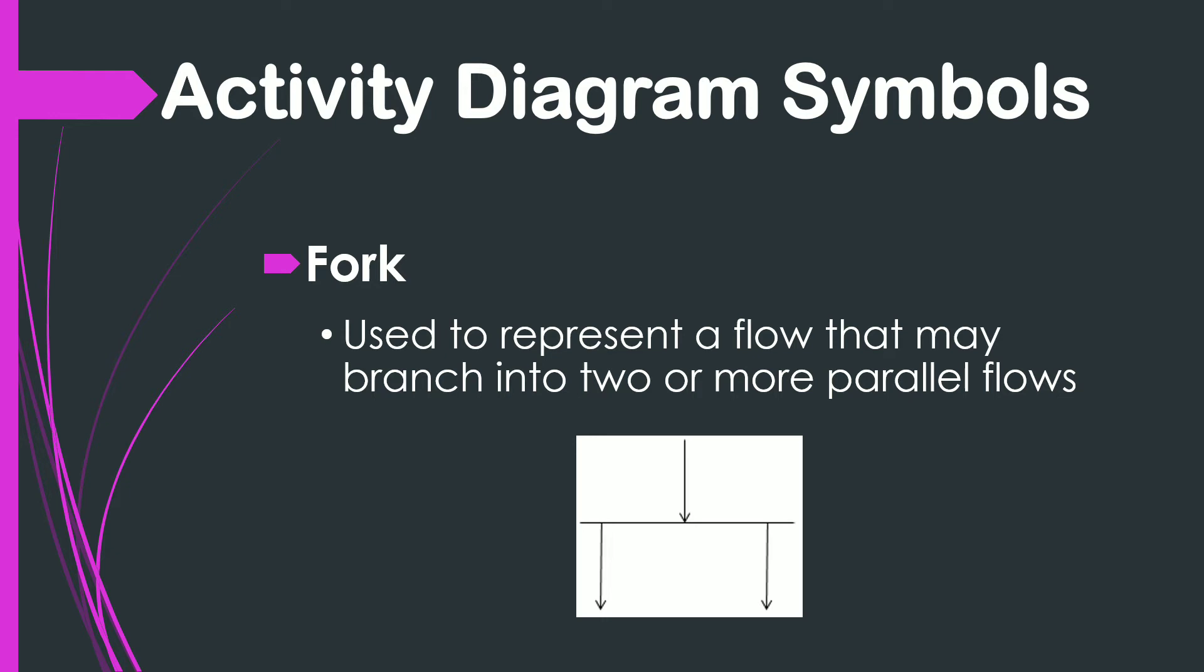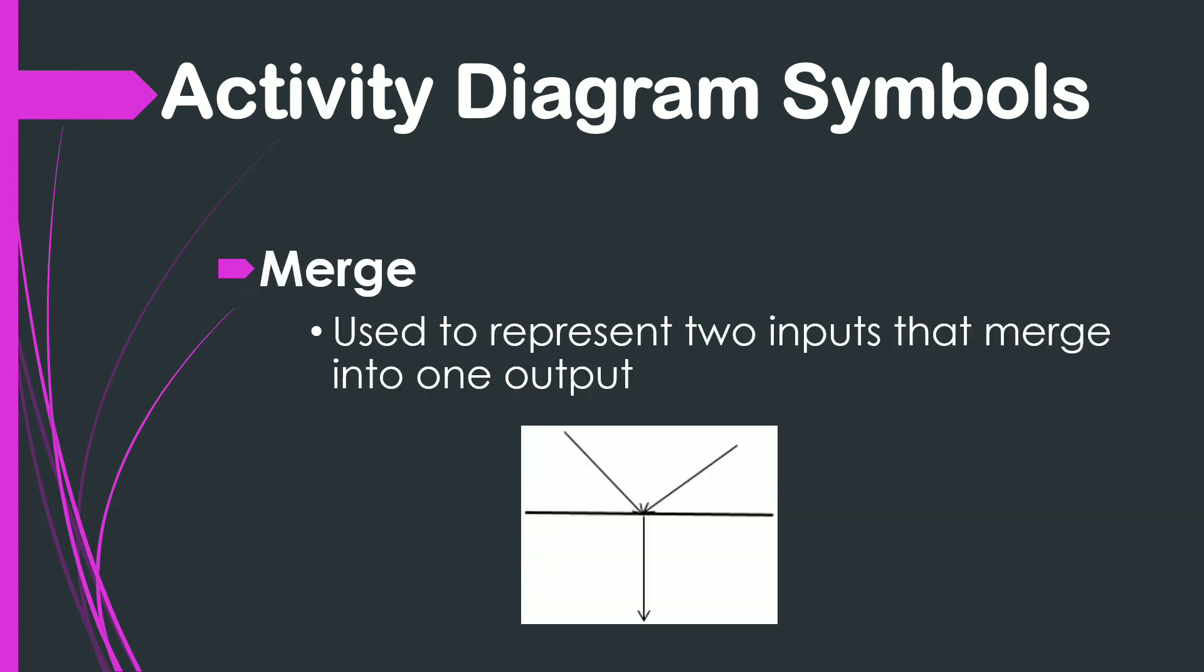The next one is the fork, a point from where two concurrent or parallel processes are executed or run or processed. It generally includes a single input, but may or may not get one output.